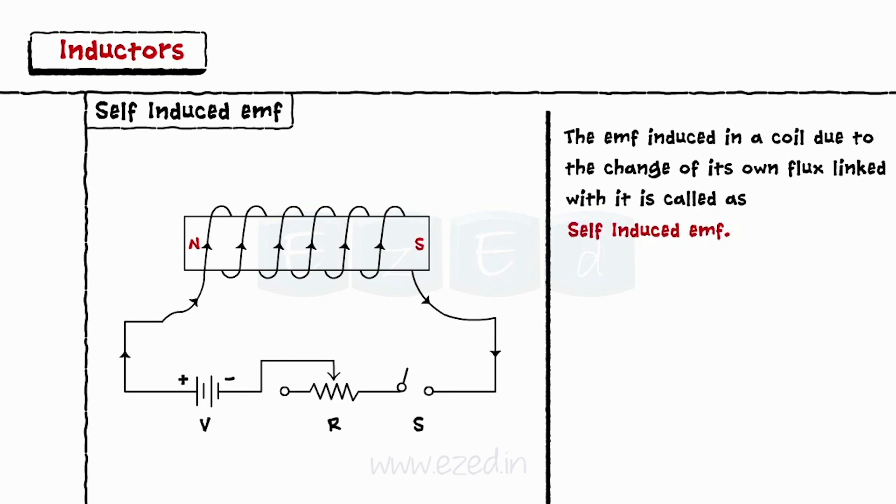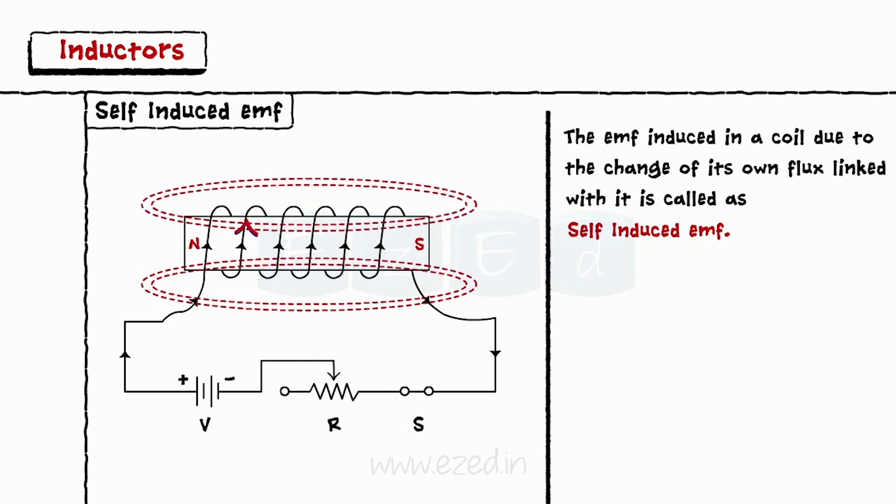Consider a coil having N turns carrying the current I with the switch S when the switch S is closed. As the current flows through the coil, it will produce the flux in the coil. This flux links with the coil itself.